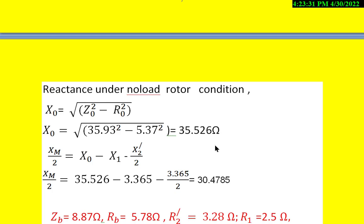In the equivalent circuit of a single-phase induction motor, Xm/2 under no-load condition = X0 - X1 - X2'/2. Substituting values: Xm/2 = 35.526 - 3.365 - 3.365/2 = 30.4785Ω.